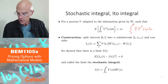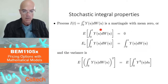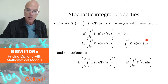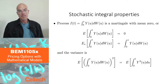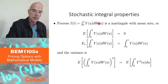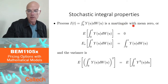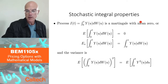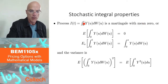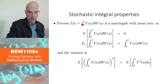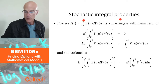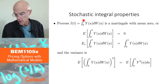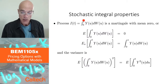Some properties of this integral. First of all, it's a martingale. This process i of t, which is the integral, is a martingale. It has mean zero. If it's a martingale, it has to have mean zero because it starts with zero. The expectation value of a martingale is equal to its initial value, and i of zero is the integral from zero to zero, so it's zero. It's a martingale, and as a martingale, its expectation is equal to the initial value, and therefore zero.